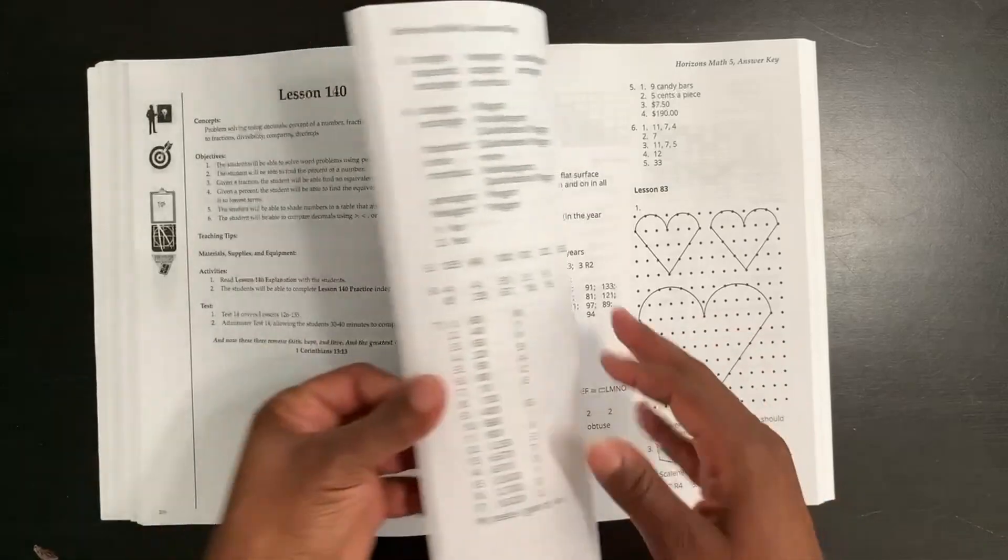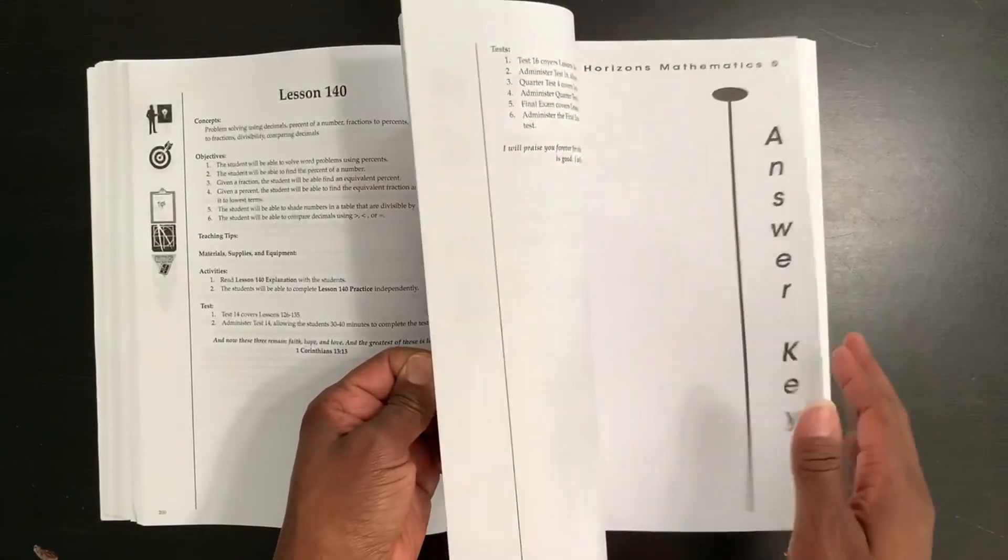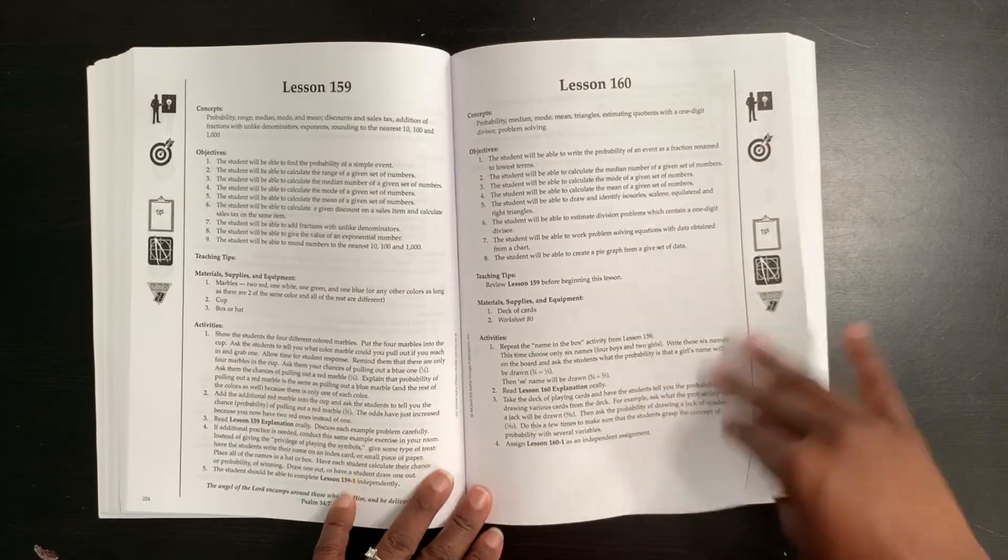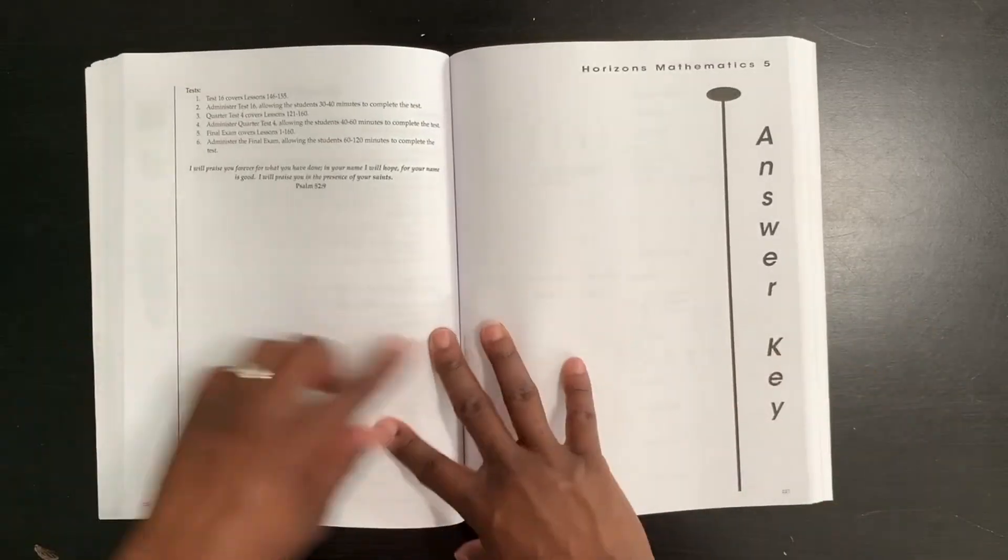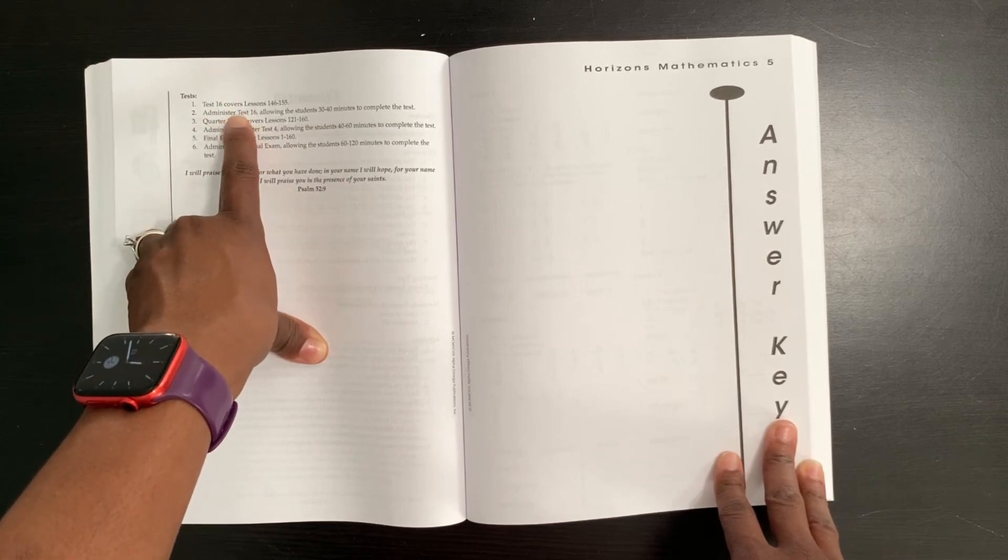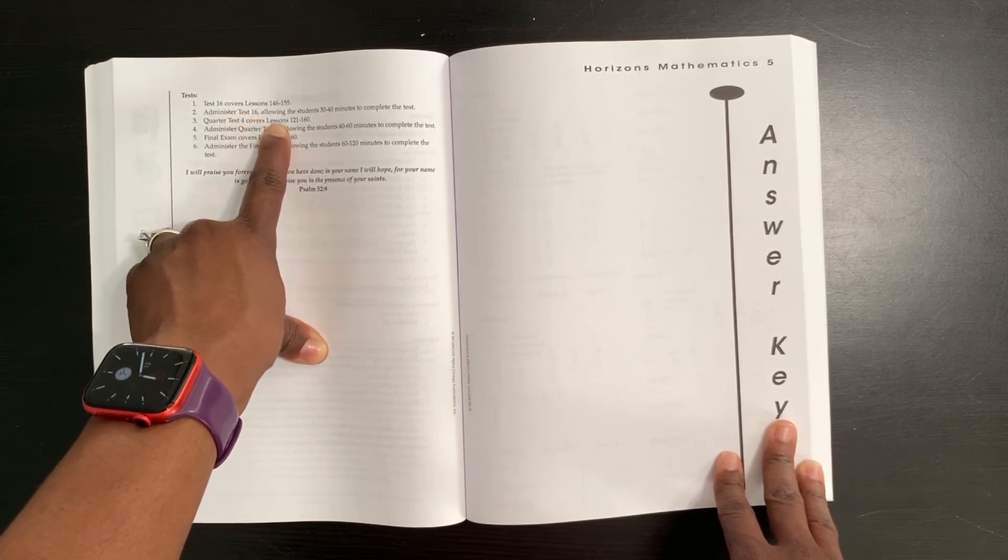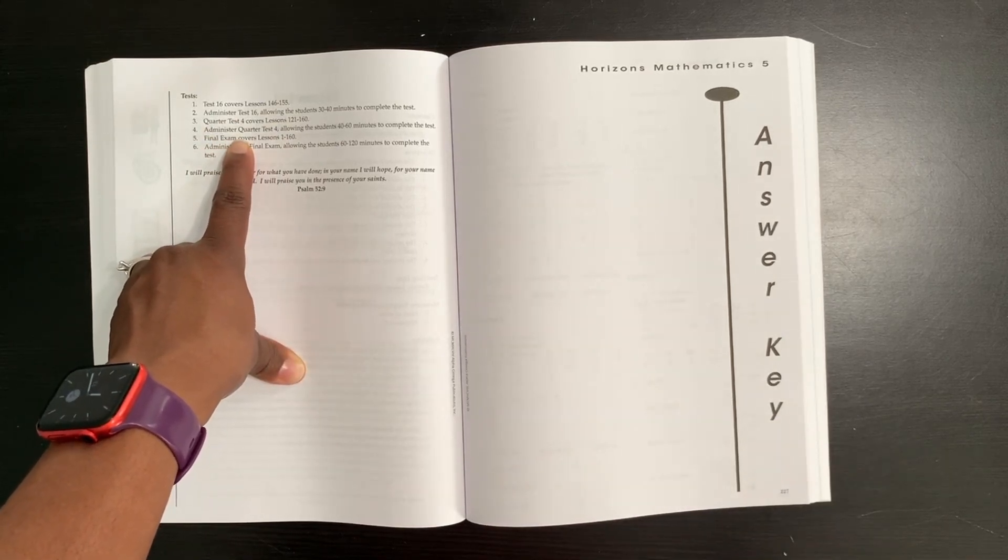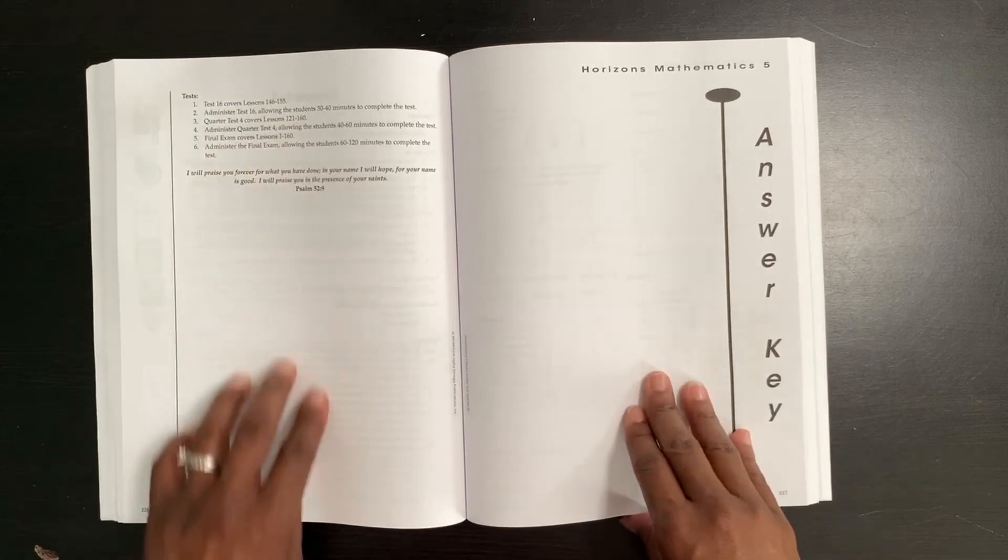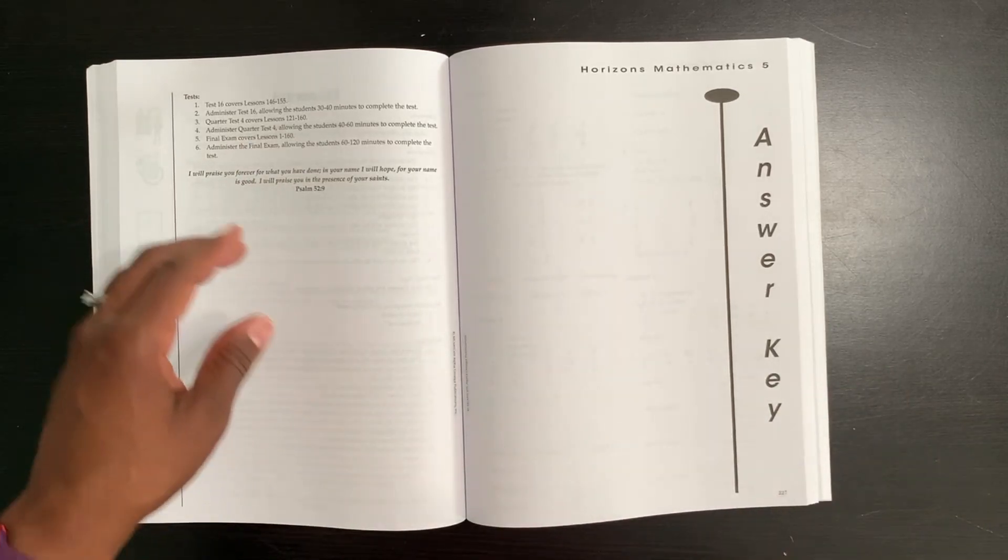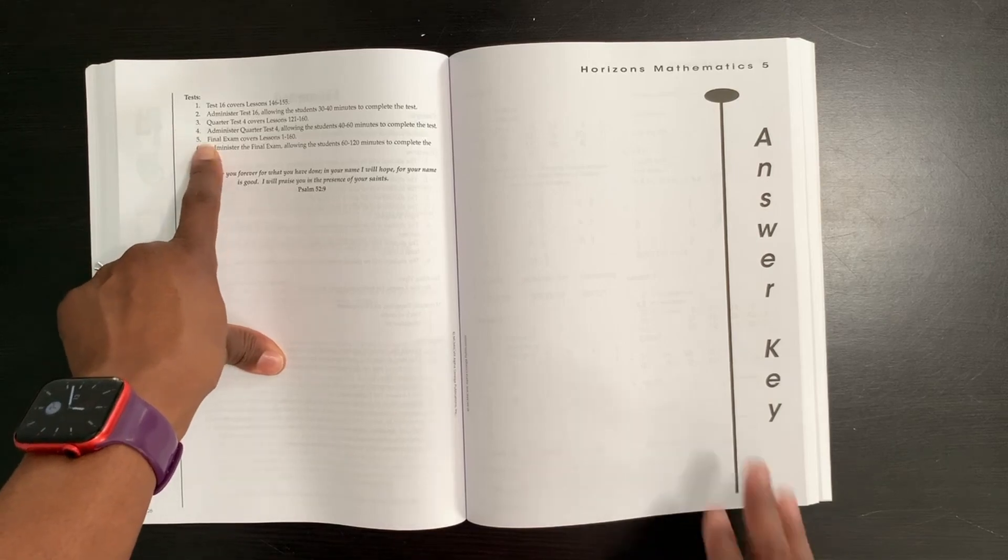Let's go all the way to the back. There are 160 lessons in Horizons Math. Lesson number 160, all here. And this one is now going to direct your child to take test number 16. They will get their quarter test number four here, and then they will have their final exam. So they could possibly have three tests in one week. It all depends on how you lay it out. I usually provide my daughter with a day in between the quarter test and the final exam.